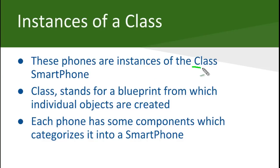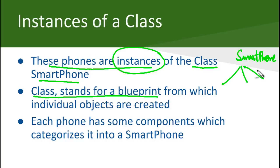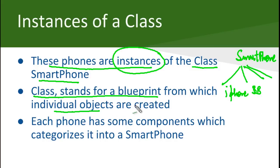We can say that there is a class smartphone and these phones are instances of that class. A class here kind of stands for a blueprint from which the individual objects are created. So you can say that there is a smartphone class and it can have various kinds of smartphones — thousands of smartphones. It can have an iPhone, a Blackberry, or anything else. So there is a basic blueprint and from this, individual objects are created.